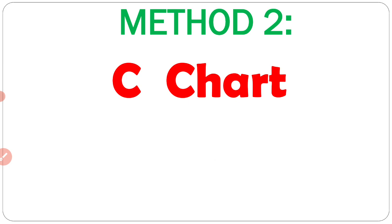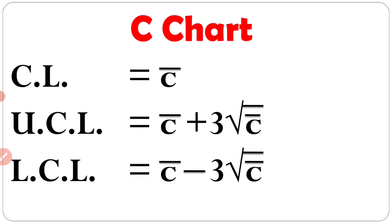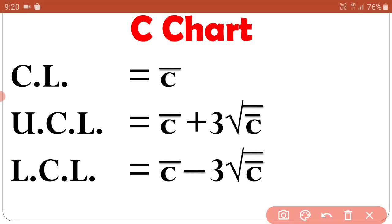This is Method Number 2: C Chart. Remember these formulas. For C Chart, CL (Central Line) is equal to C-bar, where C-bar = ΣC / M. ΣC means Total Number of Defects and M means Number of Items. UCL = C-bar + 3√C-bar, and LCL = C-bar − 3√C-bar. You should write these 3 formulas plus the formula for C-bar in your notebook.